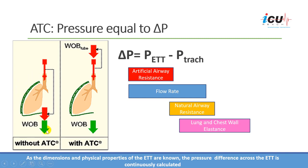Without ATC, the patient has to do the work to overcome the artificial airway resistance. With ATC, we transfer that work to the ventilator — the machine provides the pressure needed to overcome the artificial airway resistance.